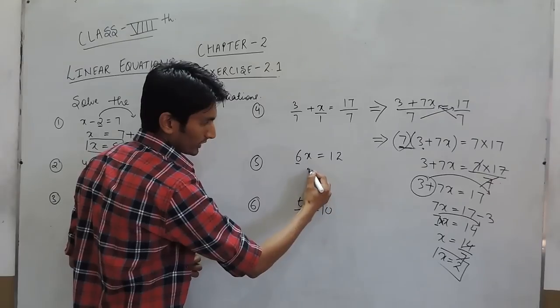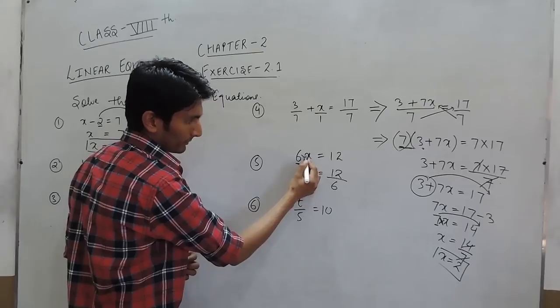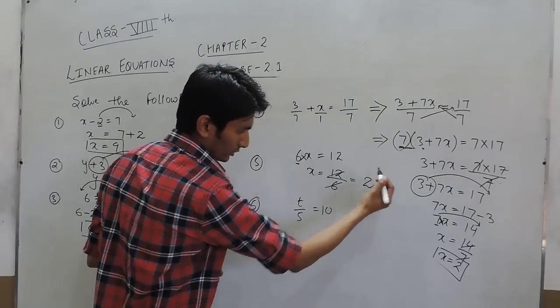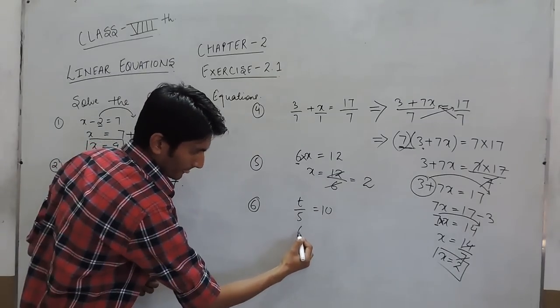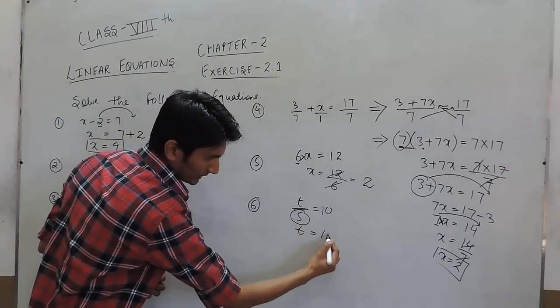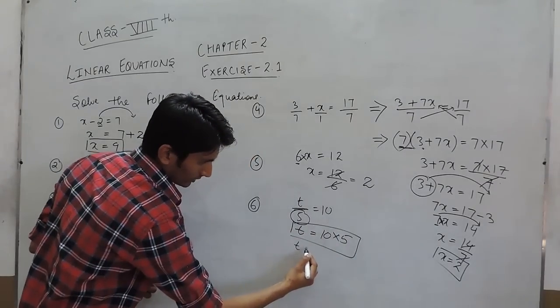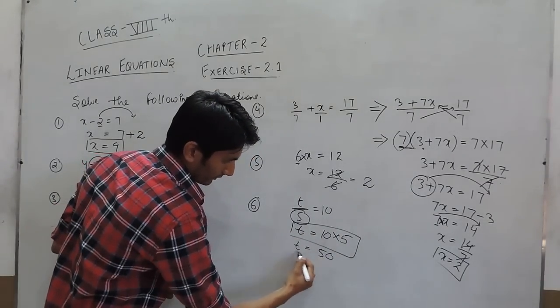In this question, this 6 when it goes to that side should divide because here it is multiplying x and the answer would be 2. In this one, because 5 is dividing t, on that side it should multiply 10, so t should be 50.